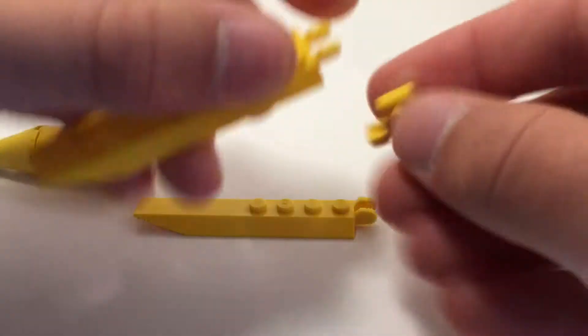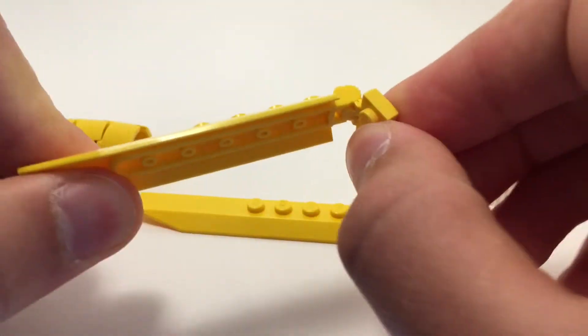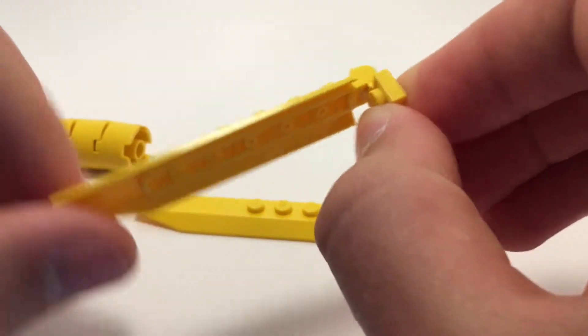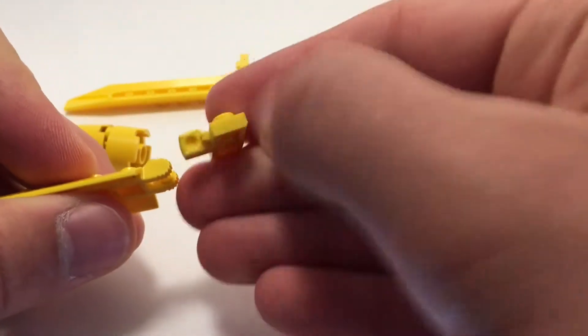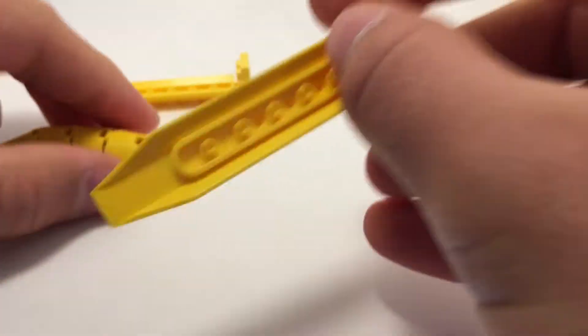And then once again, these just click in like so, and these are on click joint, so they can be angled however. And then those attach up on this.